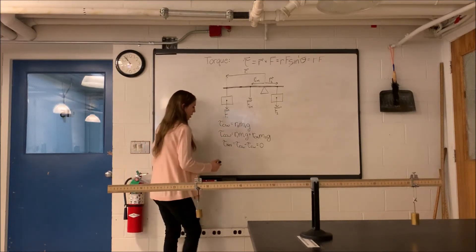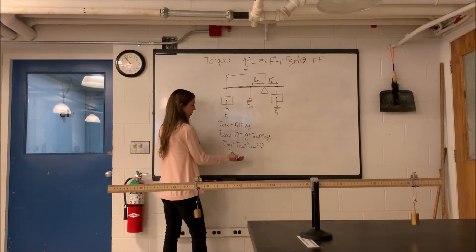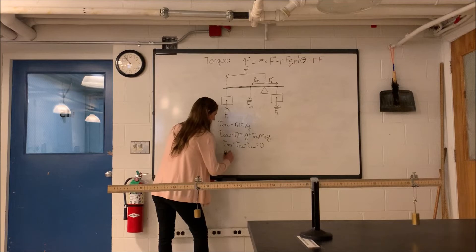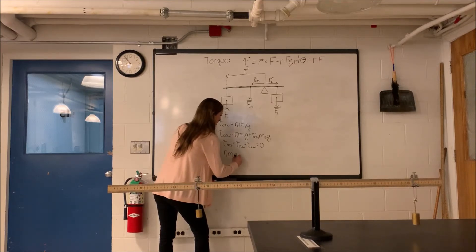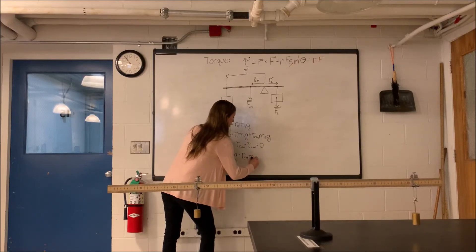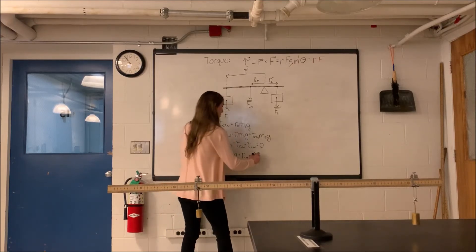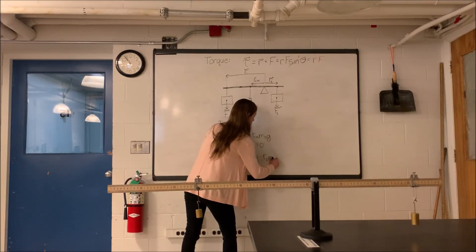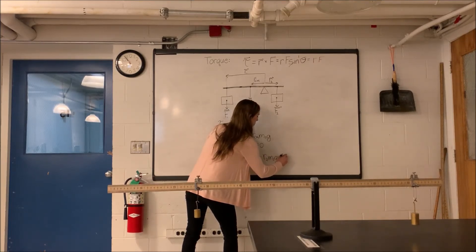So we'll write out what this equation looks like plugging in for counterclockwise and clockwise torques. So R1M1G plus RCM MSG minus R2M2G equals zero.